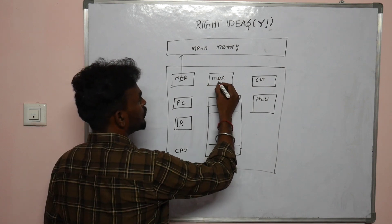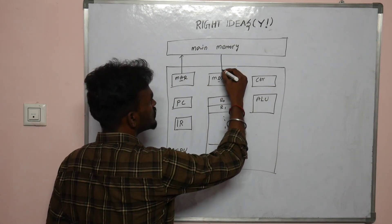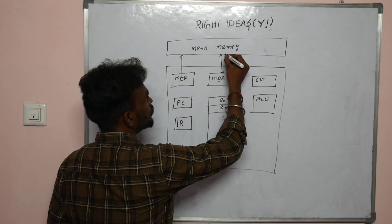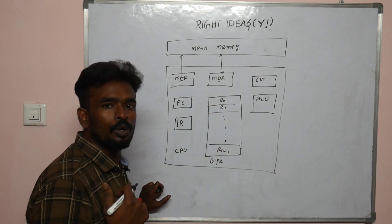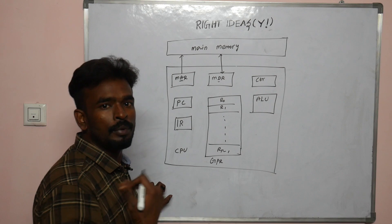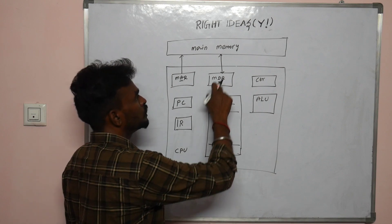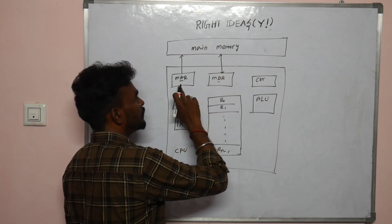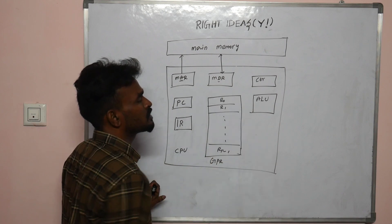MDR is the Memory Data Register. It is bidirectional. There is a program that needs to first process, restore, update, and modify data — everything. That is why we need it to be bidirectional. This is the Memory Address Register and this is the Memory Data Register.